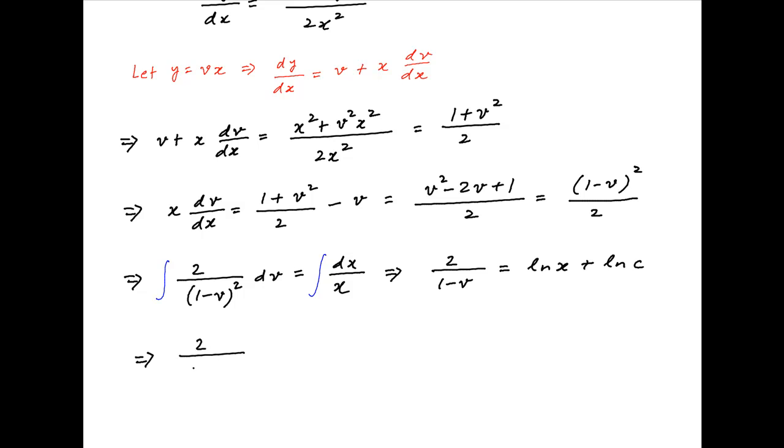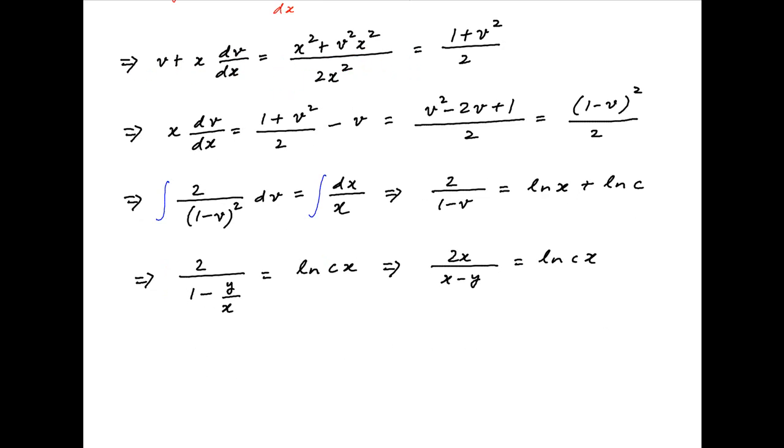Replacing v with y/x, we get 2/(1 minus y/x) equals ln(cx). This implies that 2x/(x minus y) equals ln(cx). Cross multiplying,